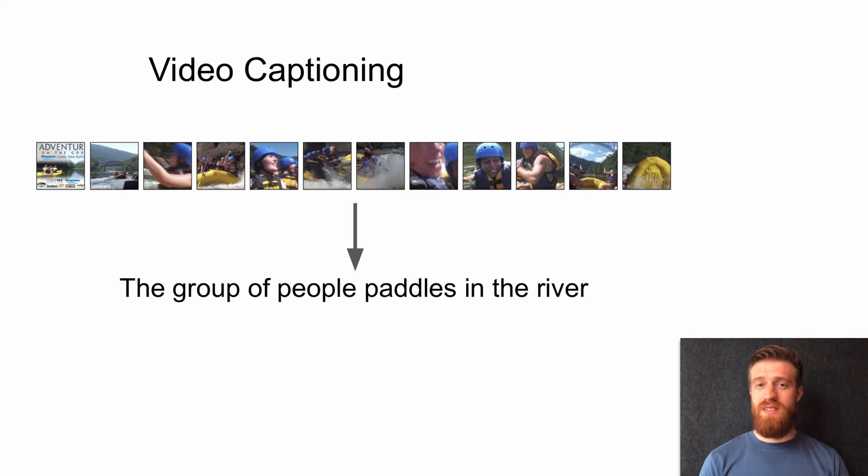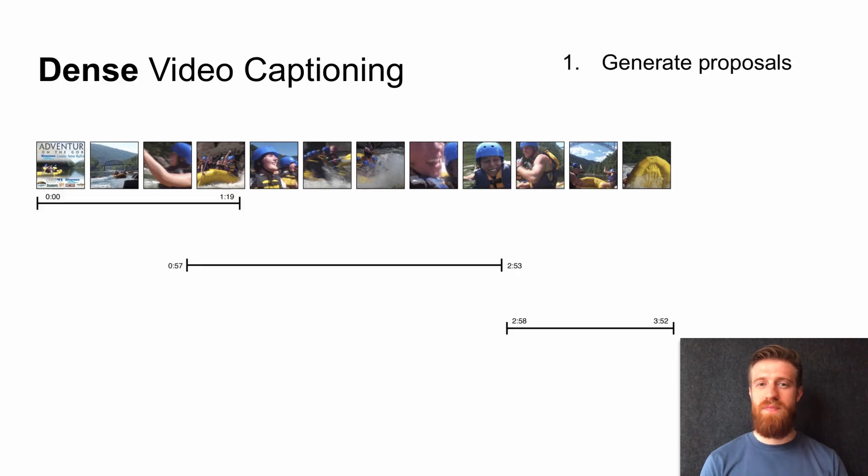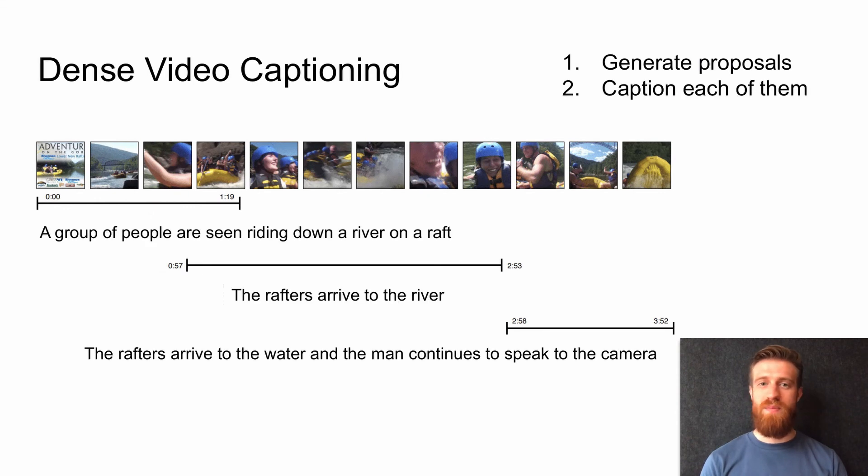Video captioning model is required to generate one sentence for an entire video, which might not be sufficient for a full-length film. Instead, a dense video captioning model should be able to first localize the important events and then generate a caption for each of them.